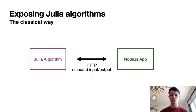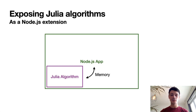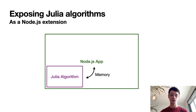You can use HTTP by building an HTTP API around your algorithm, or you can use the standard input/output of your terminal. Another way I'm going to present is to directly integrate the Julia algorithm inside the Node.js application and exchange data by sharing memory between the runtimes. This has some performance advantages and avoids the need to install Julia on the server where you will potentially deploy your application.